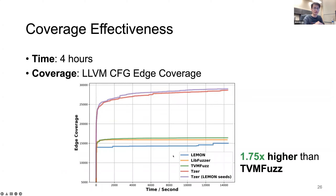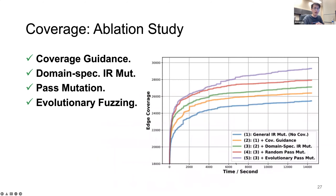We also evaluated coverage effectiveness, running different fuzzers for four hours and measuring LLVM CFG coverage for the C++ code in TVM. Our fuzzer achieved approximately 1.75x higher coverage than the second-best baseline, TVM-Fuzz. We also conducted an ablation study to demonstrate that each of our components is useful in boosting coverage rate.